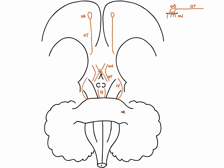Looking at the pons, we can see the large trigeminal nerve — cranial nerve five — which has three important divisions: V1 (ophthalmic), V2 (maxillary), and V3 (mandibular). Sensation runs through all three divisions covering the entire face, and a motor division also travels within V3 to the muscles of mastication. V1 passes through the superior orbital fissure, V2 through the foramen rotundum, and V3 through the foramen ovale.